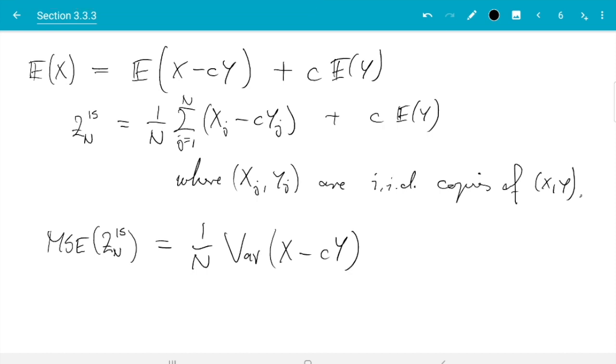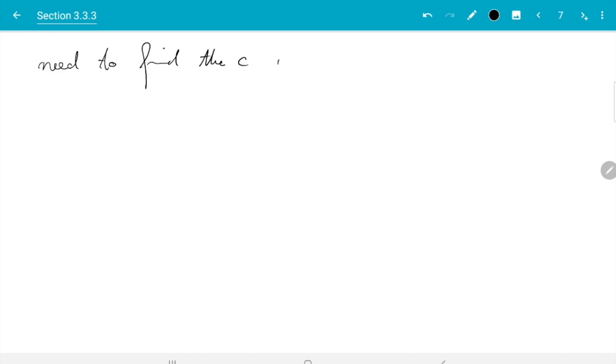So let's work that out. There is 1 over n but we don't need to worry about that. That doesn't depend on c. So we just need to find c which minimizes variance of x minus c y.